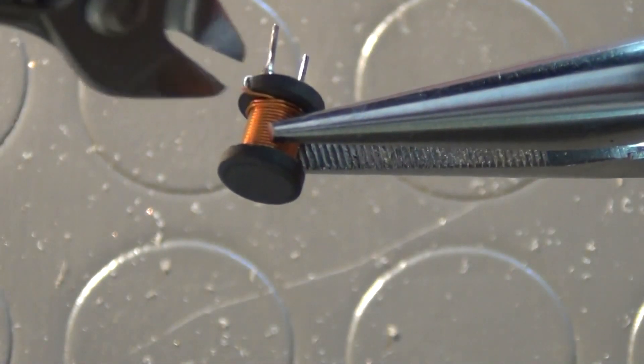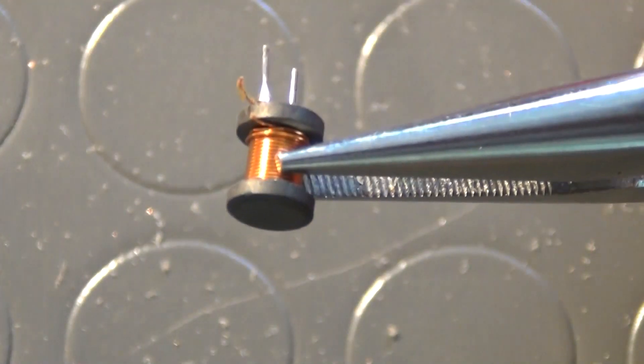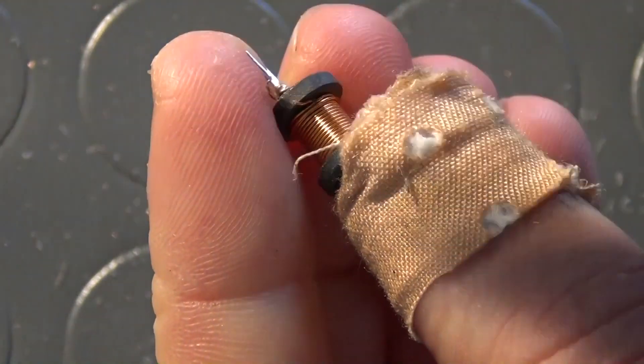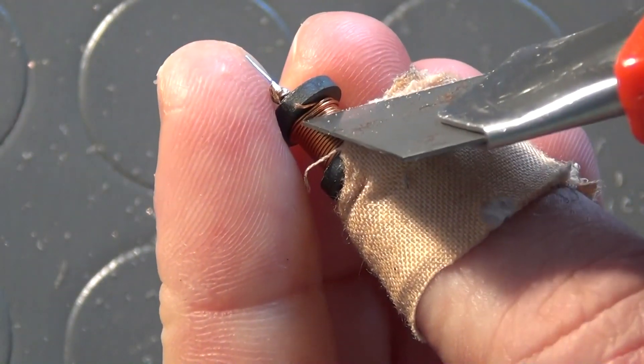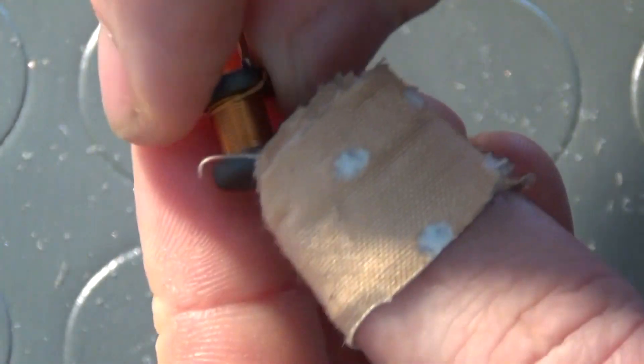For that, you should salvage three ordinary toroidal chokes from an old switch mode power supply like a cell phone charger or ATX power supply. This type of choke is also usually found in printers. You first have to remove the choke's old winding.